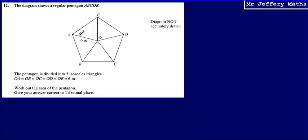So these lengths here—OA, OE, OD, and so on—they're all the same size. We're asked to work out the area of the pentagon.